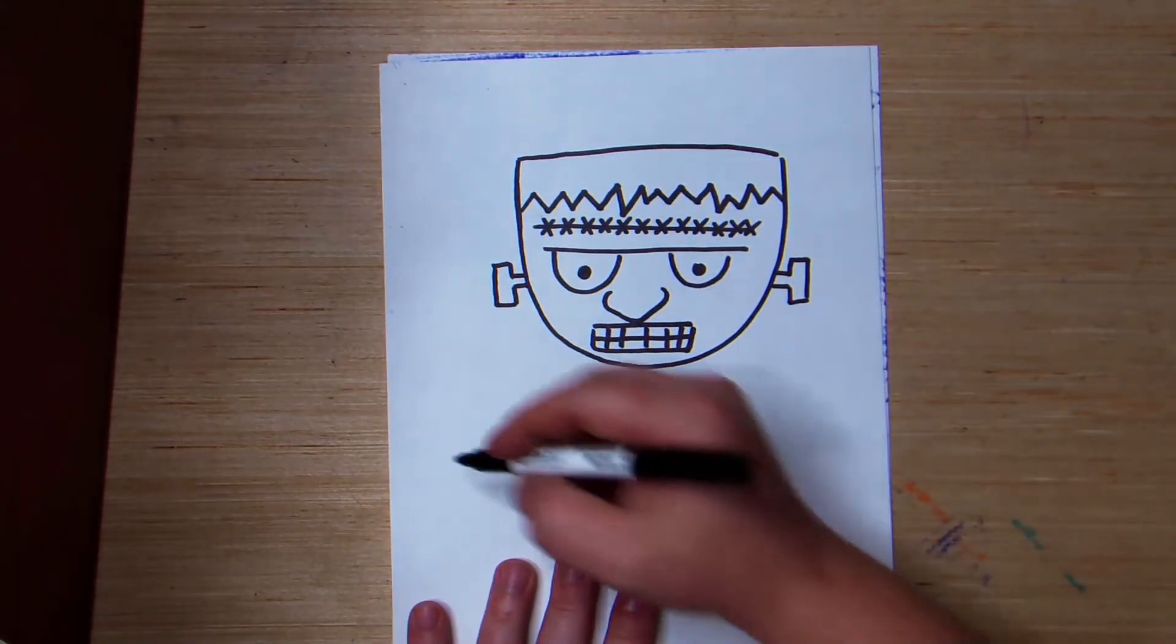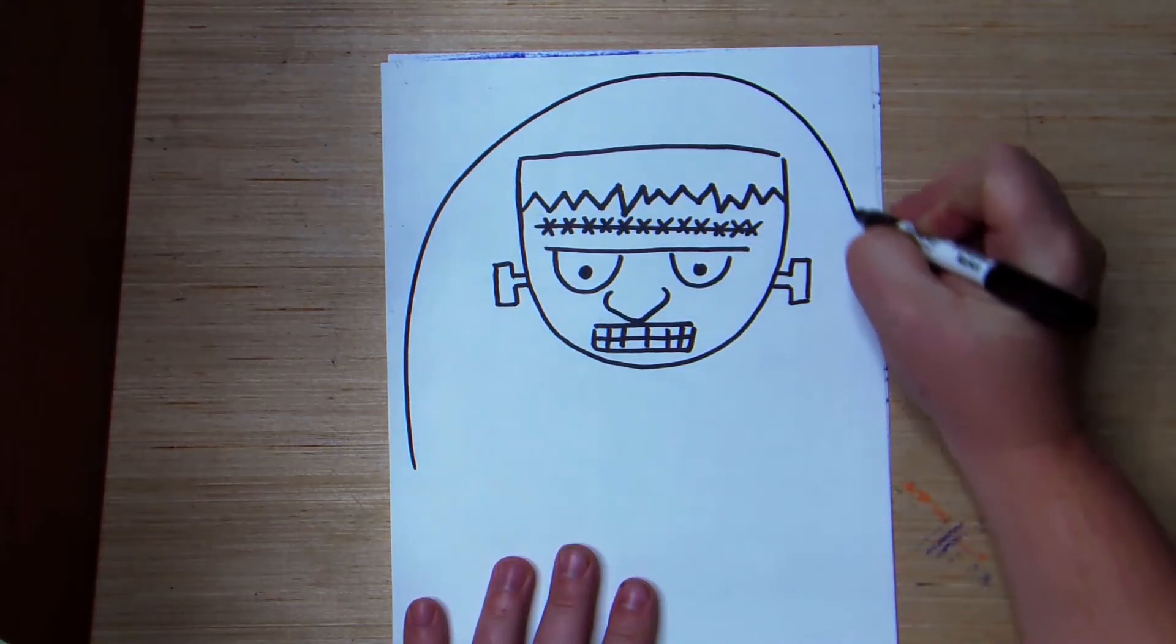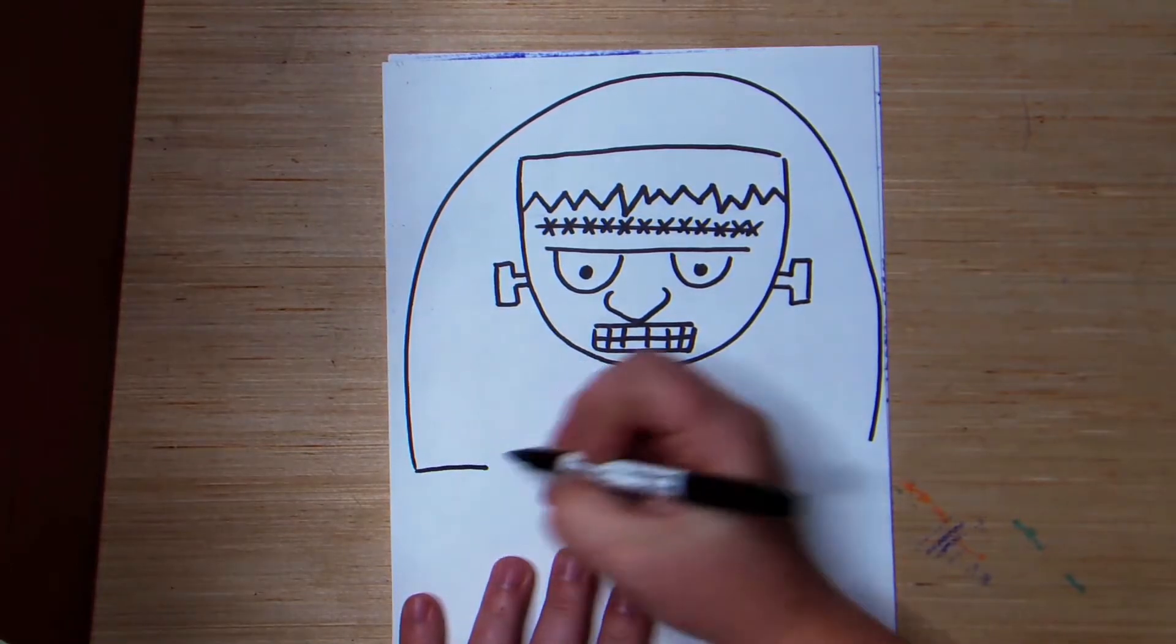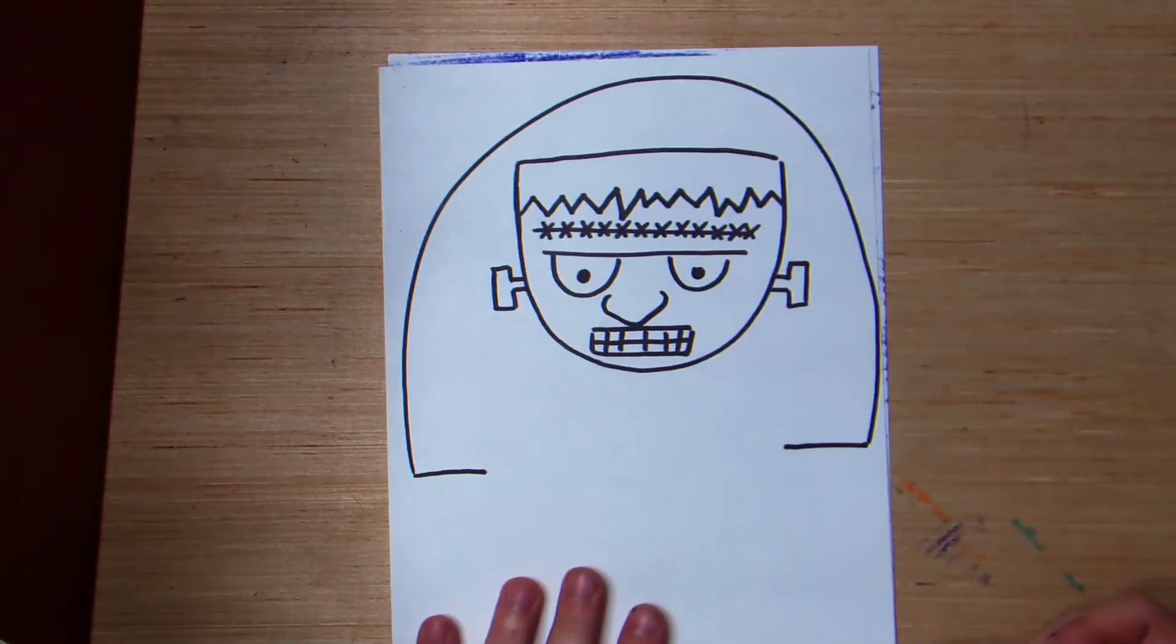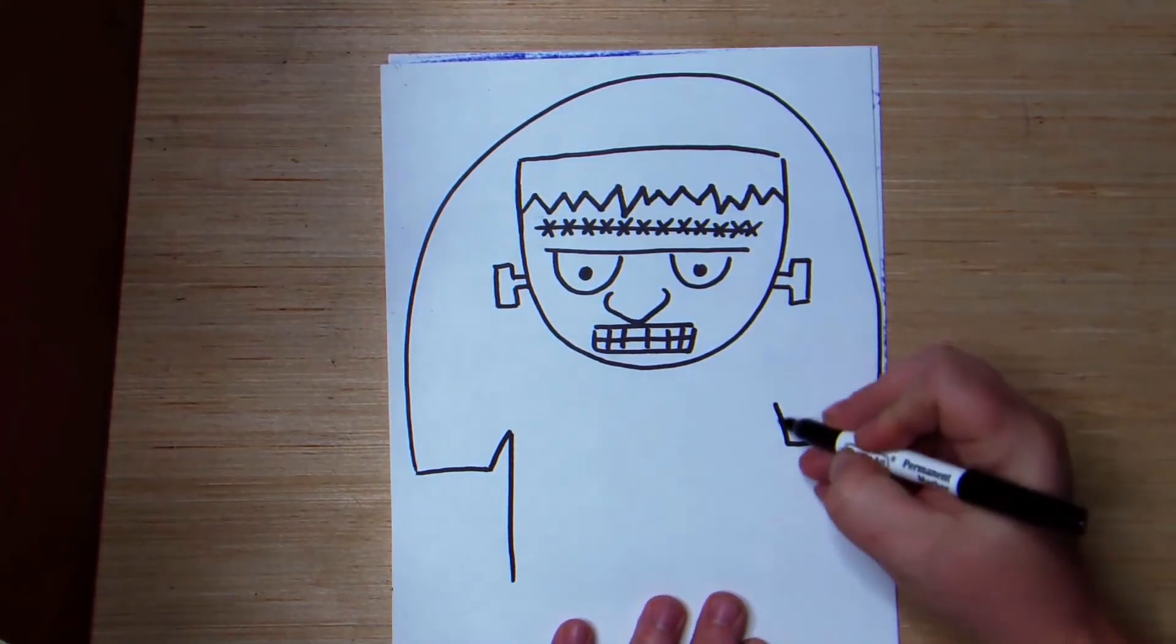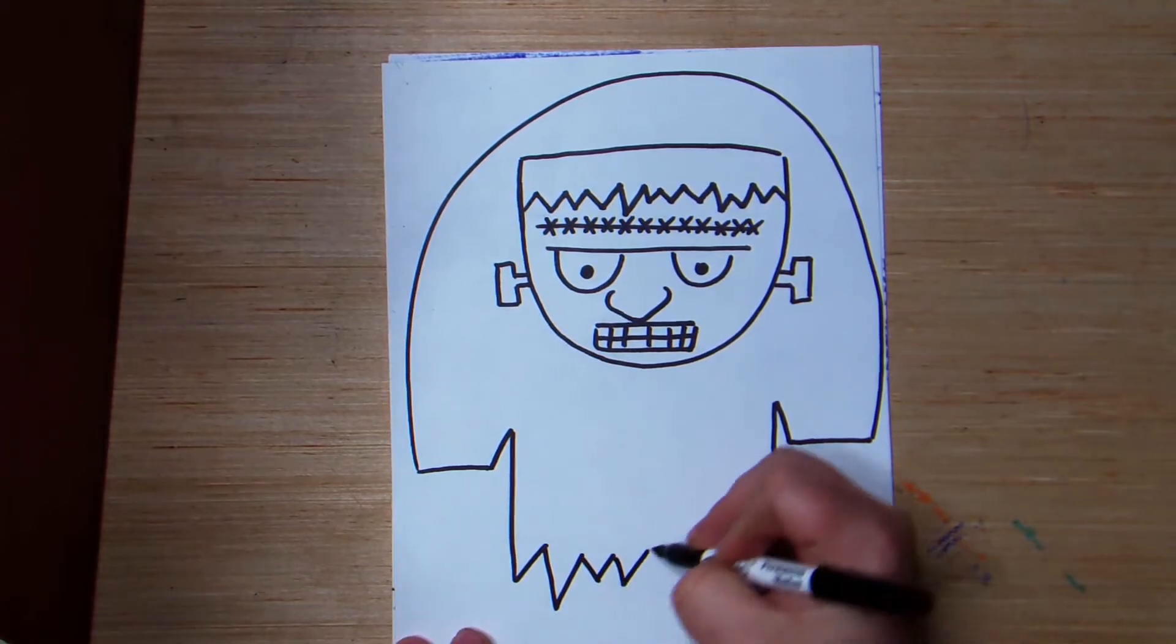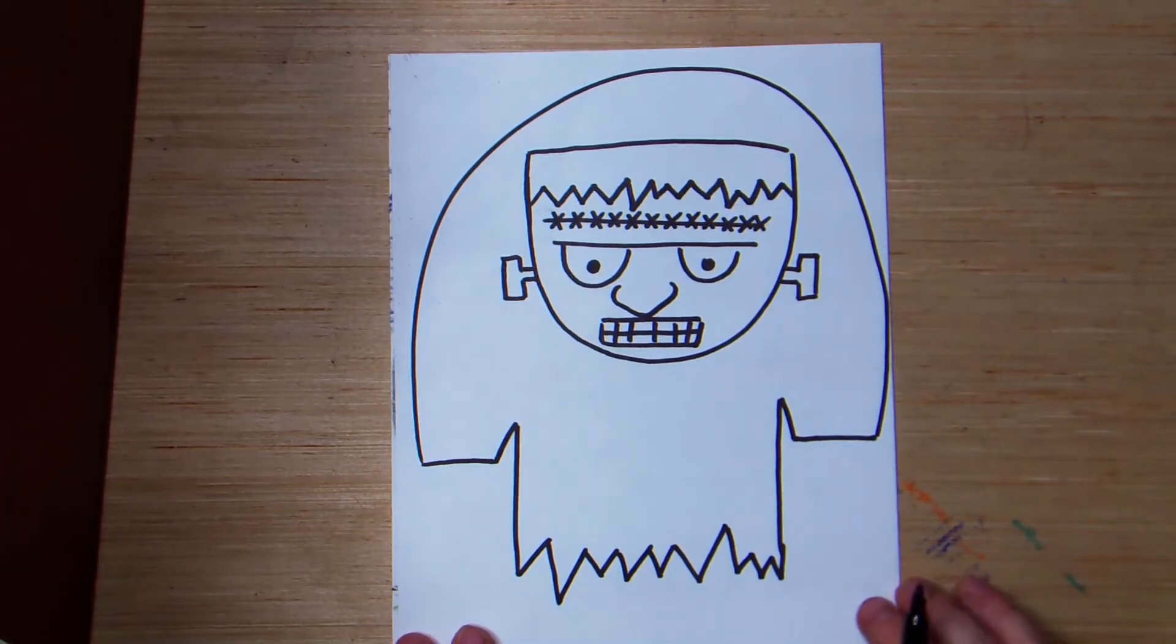Next, we're going to add his back. So, another just nice, big, upside-down U-shape, kind of like this. I'm trying to use the whole paper here. And then, I'm going to do a line like this, and a line like this. This is going to be like the sleeve. So, I like to come up, and then down. And then, here's another jagged line area. This is like the bottom of his clothes, a little bit torn up.